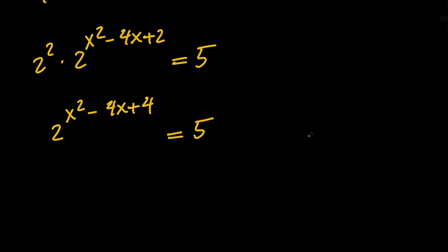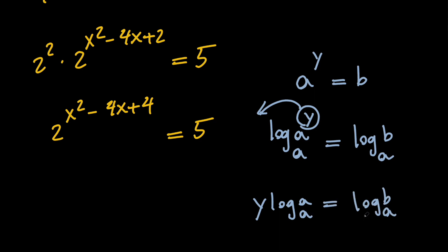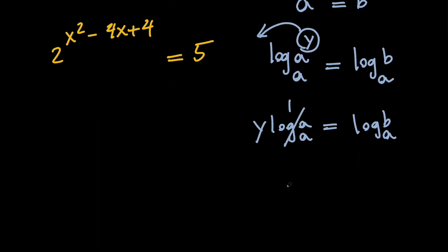Now, notice that whenever we have an exponent like a to the power of y equal to some number b, and we want to solve for y, the very best thing we can do is to take the log of both sides with base a. So we're going to have log base a of a to the power of y equals log base a of b. We can take the power and bring it in front, giving us y times log base a of a equals log base a of b. But log base a of a is 1, so we have y equals log base a of b.